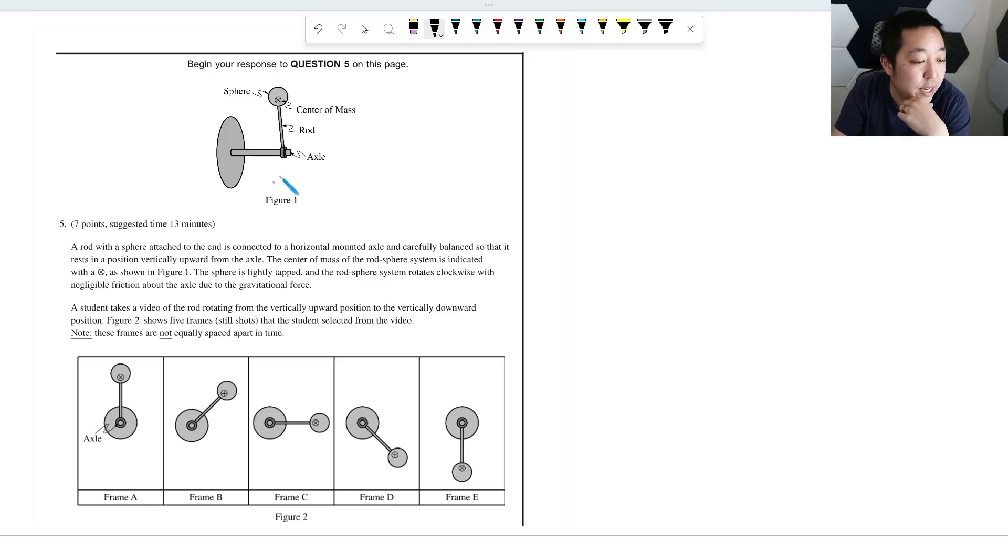A rod with a sphere attached to the end is connected to a horizontal axle and carefully balanced so that it rests in position vertically up on the axle. The center of mass of the rod's sphere system is indicated with an X. The sphere is lightly tapped and the rod sphere system rotates clockwise with negligible friction about the axle due to gravitational force. The student takes a video of the rod rotating from the vertically upward position to the vertically downward position. Figure 2 shows five frames the student selected for the video.